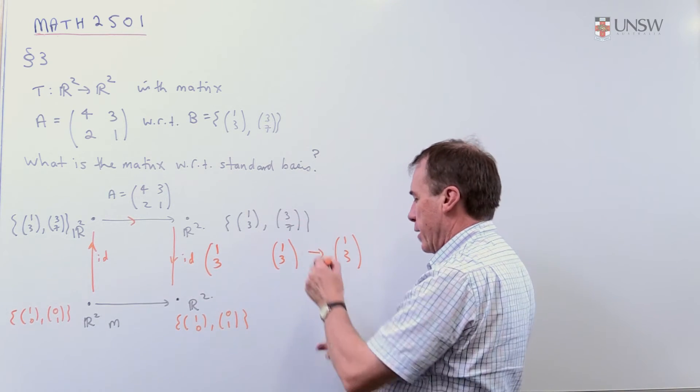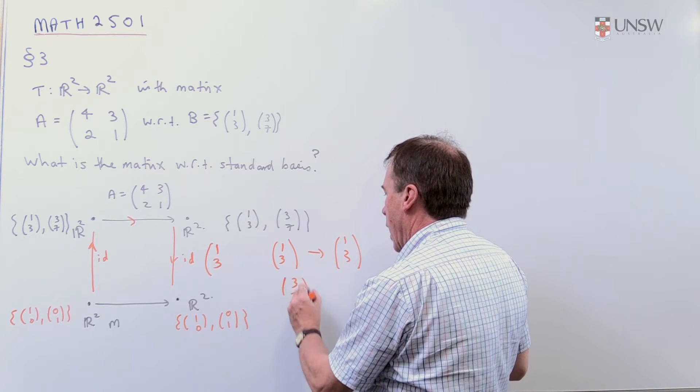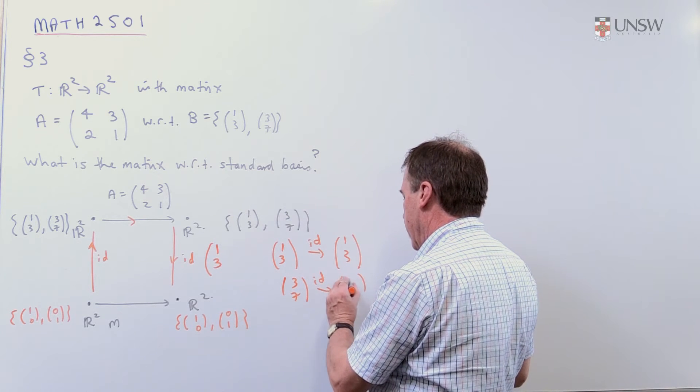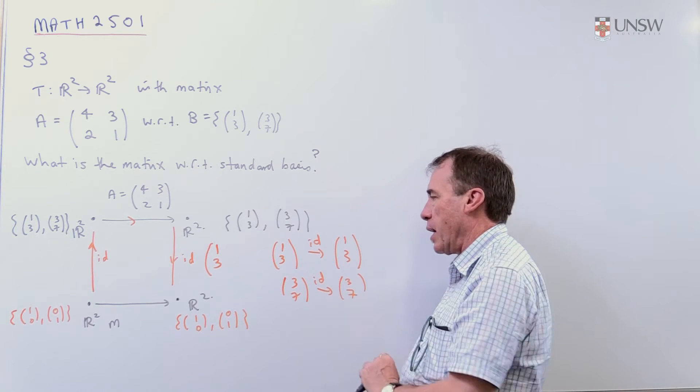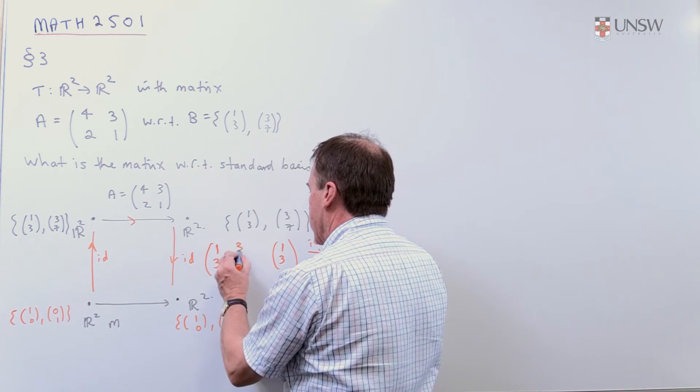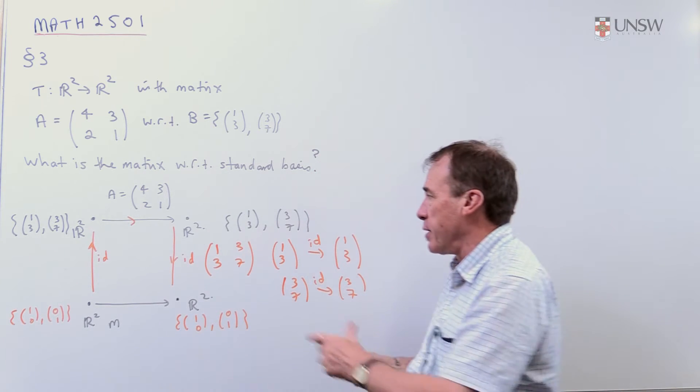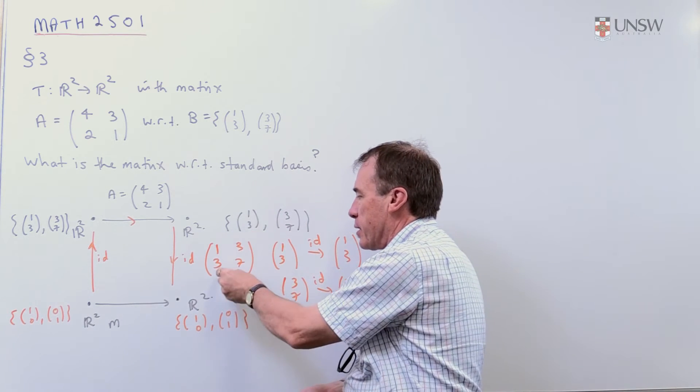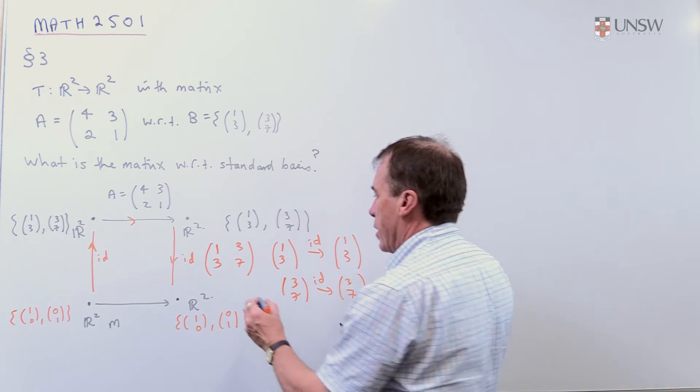Similarly, I take the vector (3, 7). Under the identity map, what happens to it? Nothing. It stays the same. Its coordinates are (3, 7) with respect to this basis. And so that becomes the second column. So that's really easy. So in fact, these basis vectors here end up in this case as just the columns of the matrix. I might just squeeze in, I might call that matrix P.